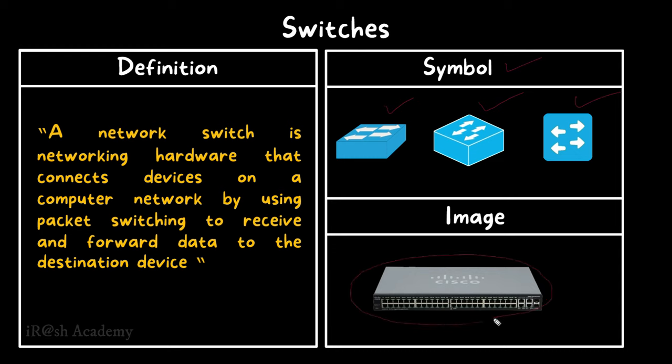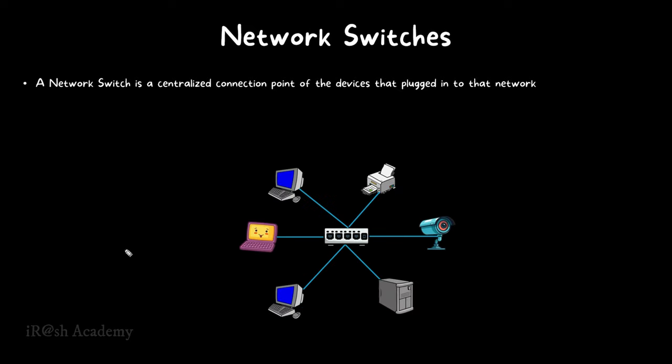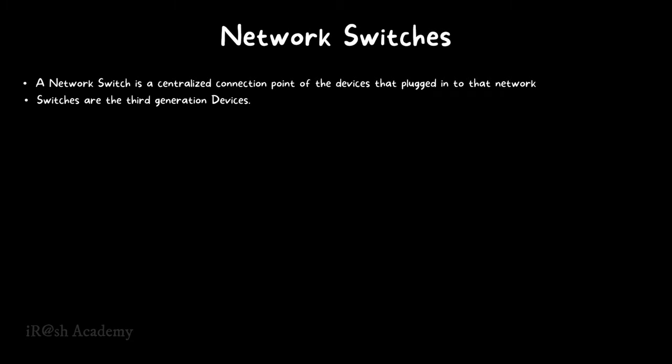A network switch is a centralized connection point for all devices plugged into the network. In the network diagram shown, multiple devices — laptops, desktops, servers, cameras, and printers — are all connected to a single network switch. All network data passes through the network switch, which is why we call it the centralized connection point.